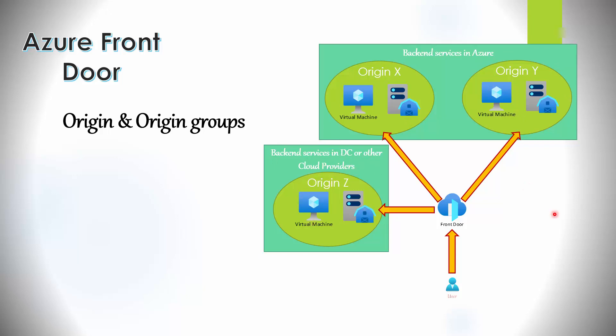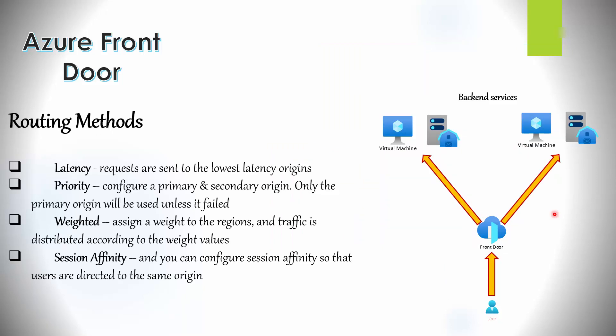Moving to routing methods: there are four different methods for how HTTP or HTTPS traffic is distributed between different origins — latency, priority, weighted, and session affinity. With latency, requests are sent to the lowest-latency origin, meaning the nearest set of origins wherever they may be in the world, to keep network latency at a minimum. The latency routing method combined with anycast technology means users get the best performance based on their location. Note that the closest origin is measured by network latency, not physical distance.